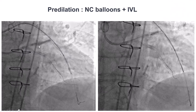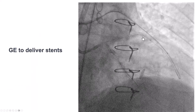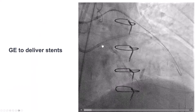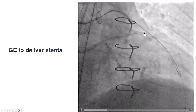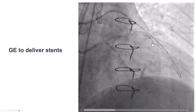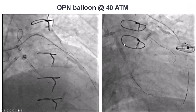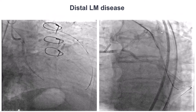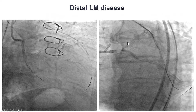We predilated, but there was significant calcium and balloon under-expansion, so we performed intravascular lithotripsy. We then used the antegrade guide extension to deliver long stents. There was still an area of under-expansion, so we used the SIS open balloon up to 40 atmospheres, which successfully expanded this area of calcification.